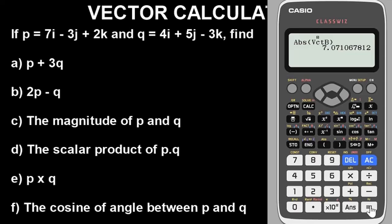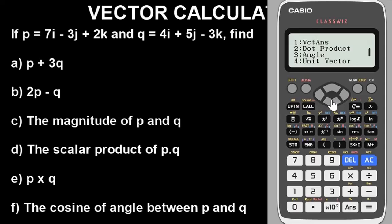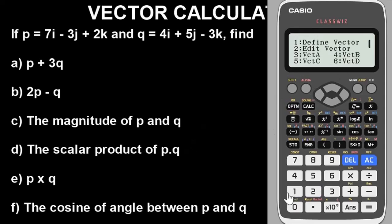Having gotten the magnitudes, let's find part D — the scalar product or dot product. For the scalar product of vector P and Q: go to option, vector A representing vector P is option 1. Then to enter the dot, go to option and move downward with the down key. You will see 'dot' — press it. Then enter vector Q which is vector B, option 2. Press equal — the scalar product or dot product of vector P and Q is 7. As simple as that.